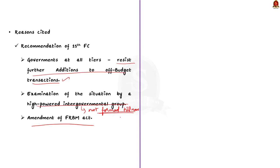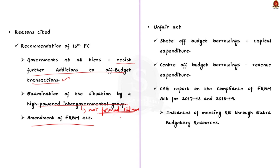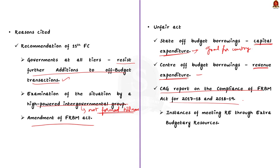The off-budget borrowing by corporations against state guarantees is mostly used for capital investment. Meanwhile, the center has also been raising off-budget borrowings, but mainly for meeting revenue expenditure. As per the CAG report on compliance of the FRBM Act for 2017-18, the report pointed out eight instances of meeting revenue expenditure through extra-budgetary resources, but such borrowings were not reflected in the budget of the central government. So treating the off-budget borrowings of states as state's debt is totally unjustified.